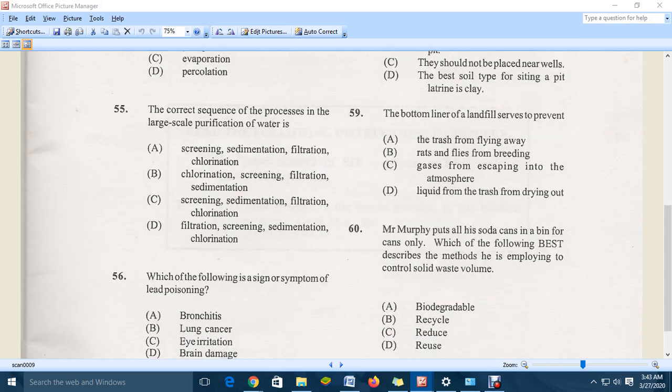Move to the final question. So Mr. Morphe puts all his soda can in a bin for cans only. Which of the following best describes the method he is employing to control solid waste? That would be recycle, and that is D.